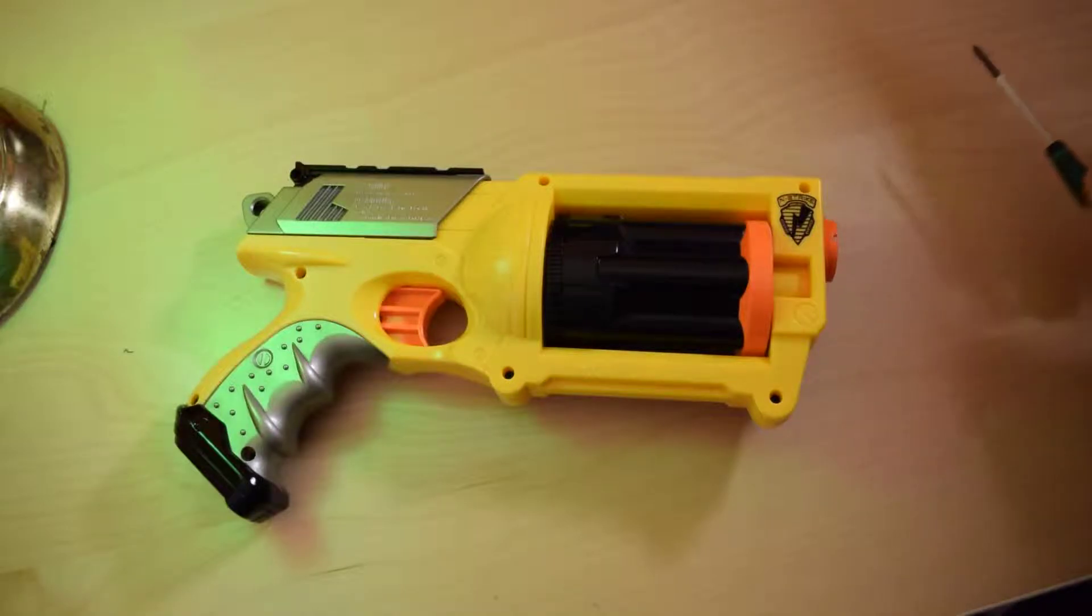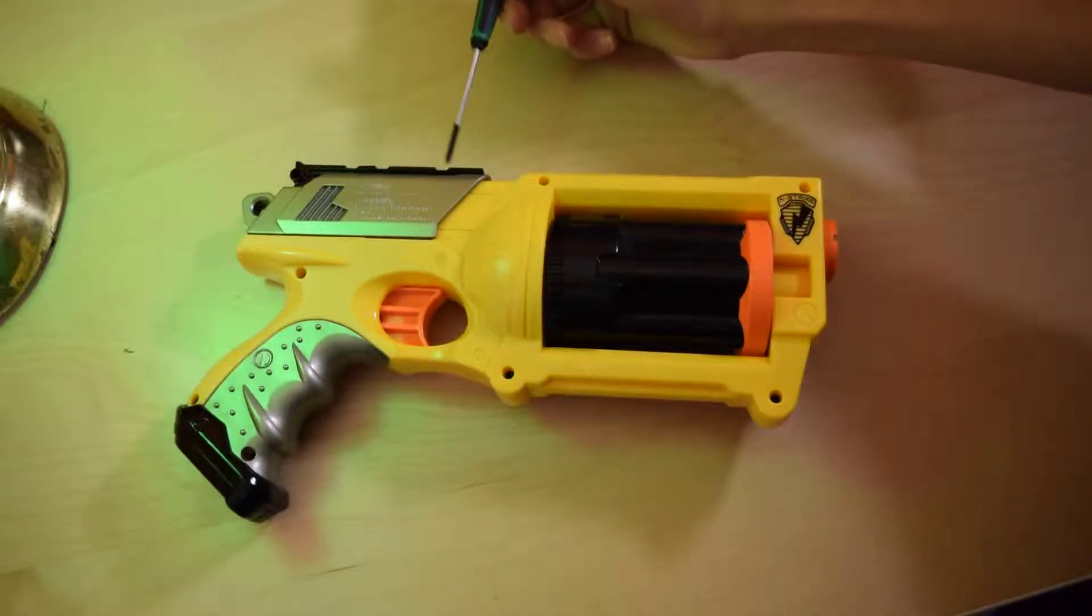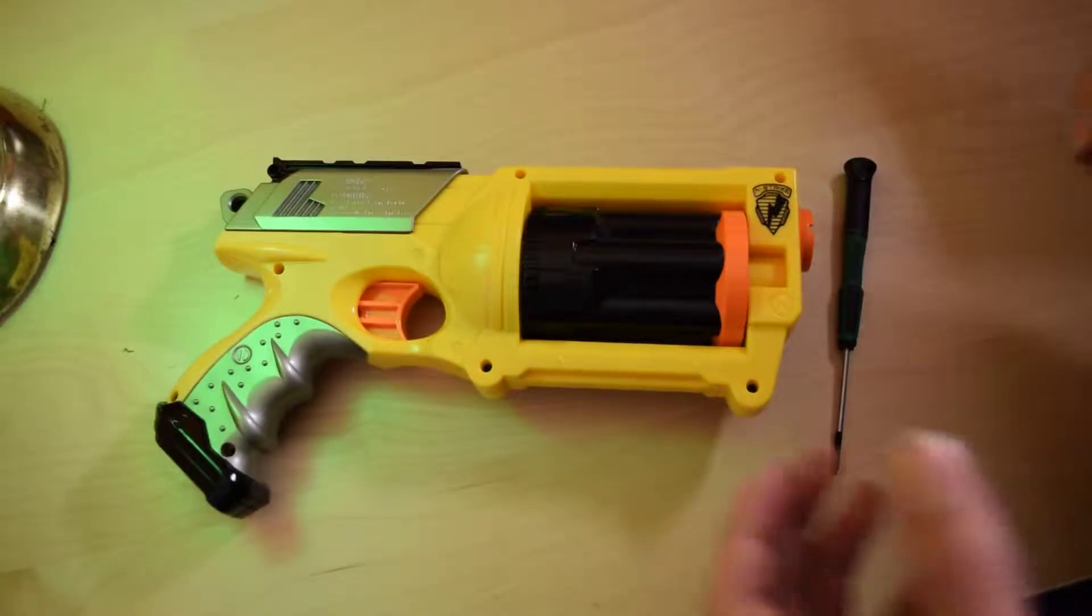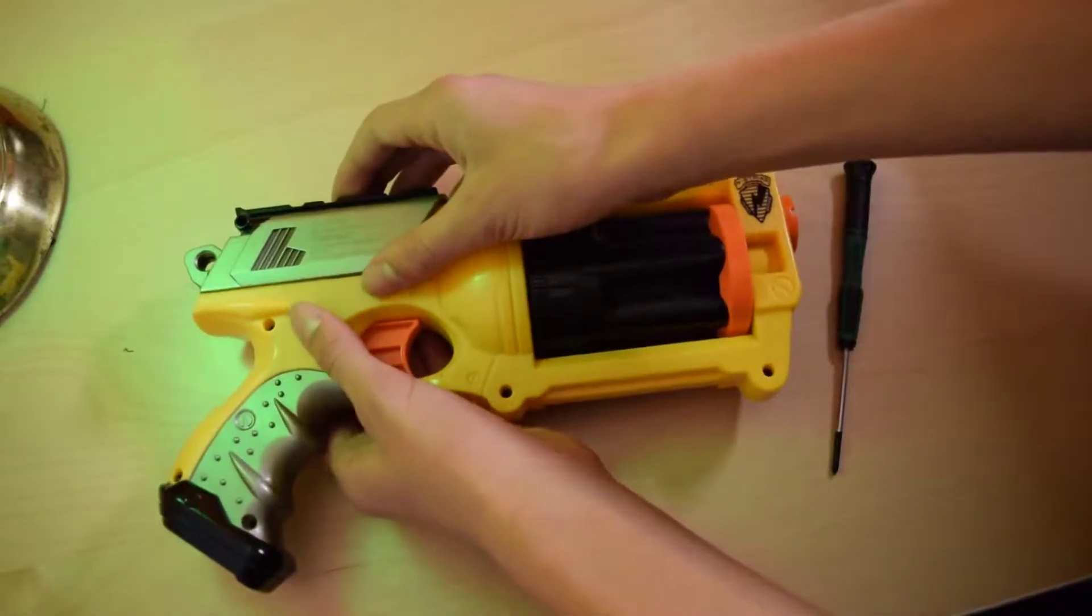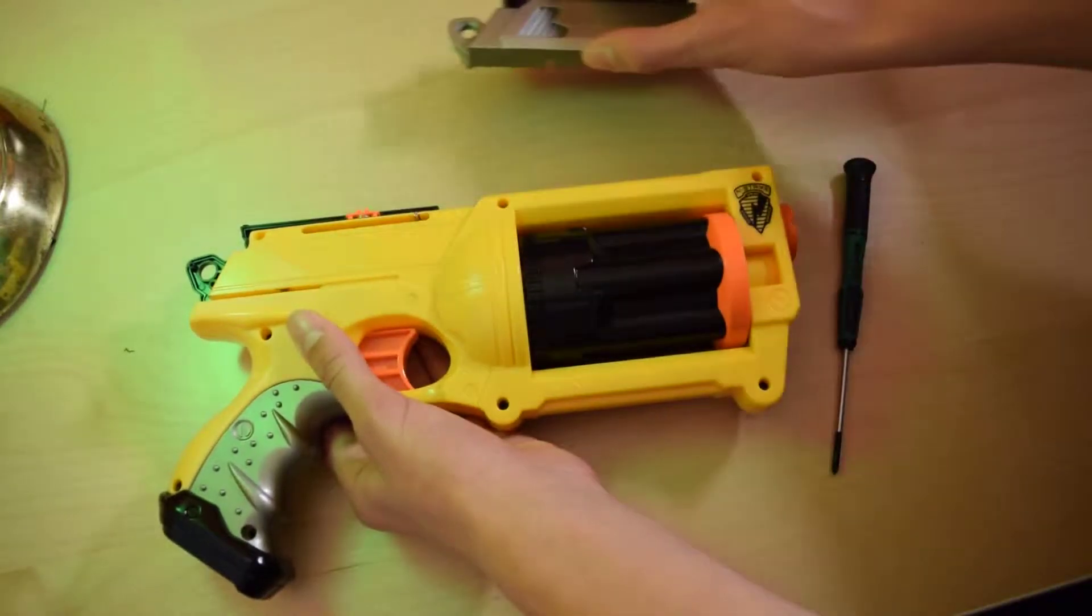The first step is to remove the three screws on the priming handle. There's one in this little hole, one over there, and one back here. You need to do that because there's another screw hidden behind it. After you've done that, you can pry apart the priming handle. Make sure you leave the bottom half in because it'll make it easier when you're putting it back together later.